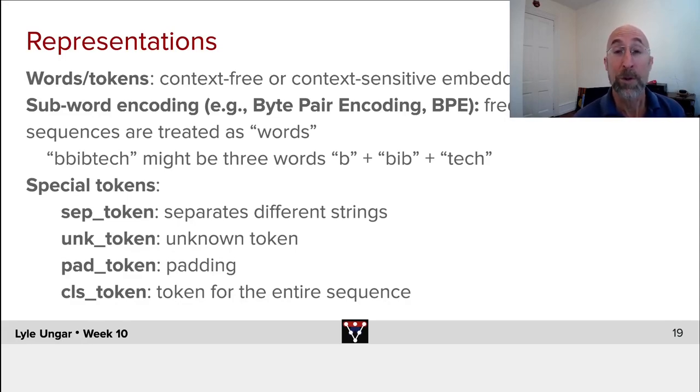So for example, if one saw the word B-I-B-T-E-C-H, bibtech, this might be recognized as three subwords. The first one B, the second one bib, which would be embedded based on its frequent context, like a bibliography or whatever. Maybe a bib like a child's bib, it's ambiguous.